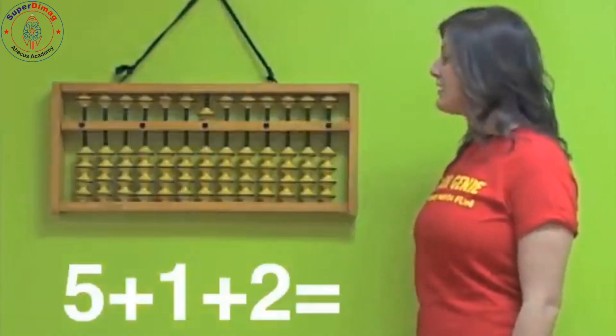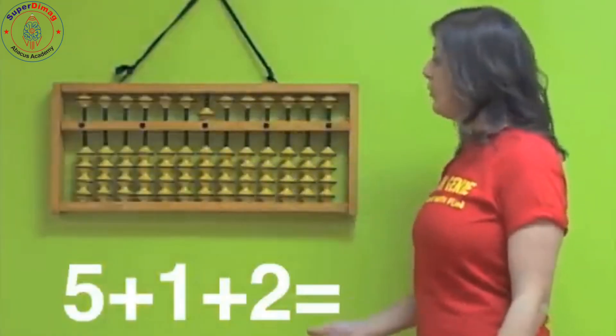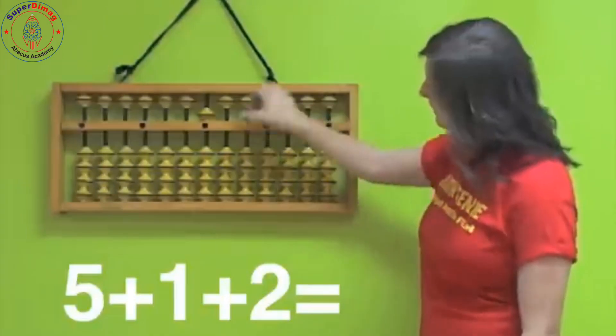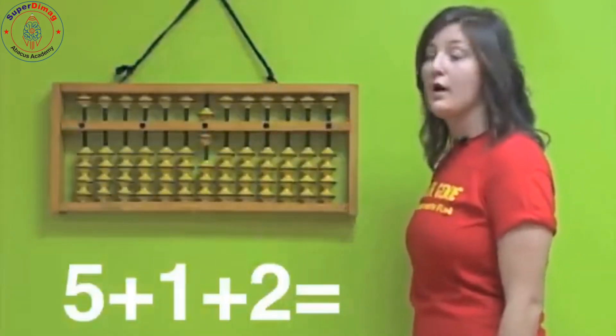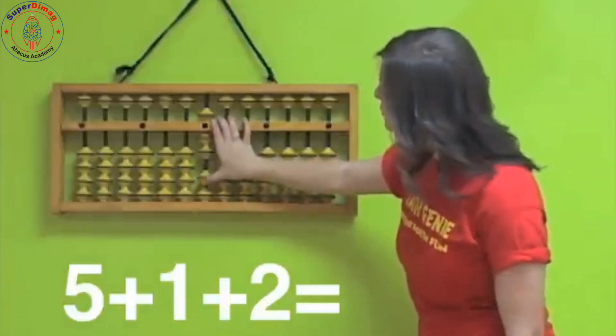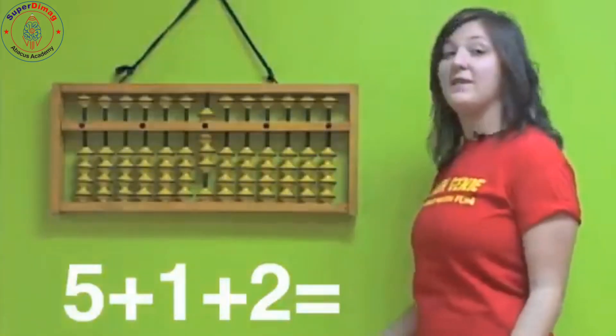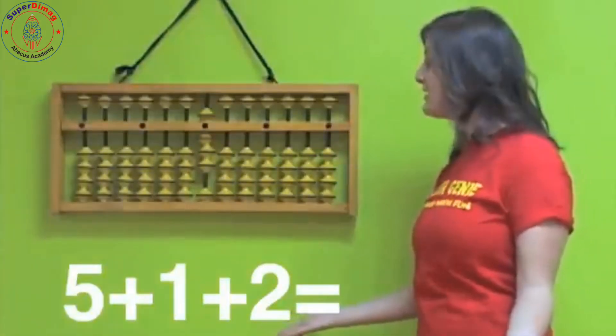Add one. Well, is one on top or on the bottom? One is on the bottom, so I'm going to use my thumb and add one. And now I'm going to add two more. So let's see. One, two. And now I can figure out what my answer is. Answer is eight.